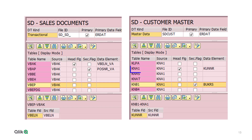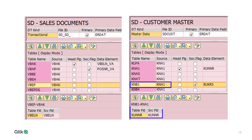It uses KNA1 as the header table, and its relation to table KNB1 relies on a join using common field KUNNR, which is the field that stores the customer number. It's worth noting that data types can be customized, and the most common way of doing so is by adding a relationship to one or more Z tables.